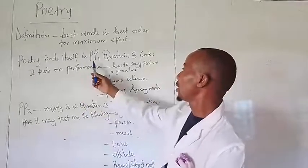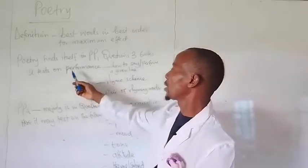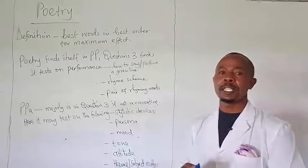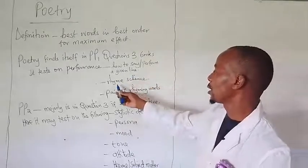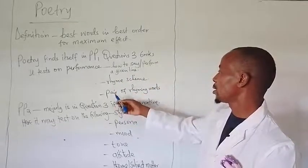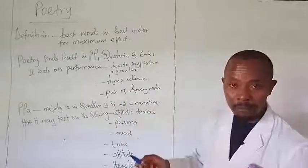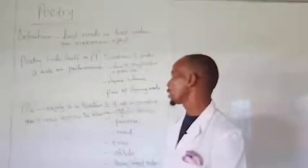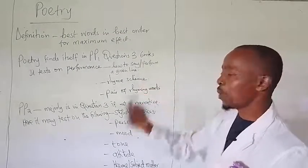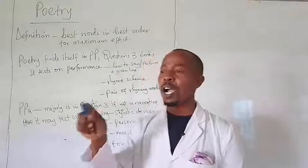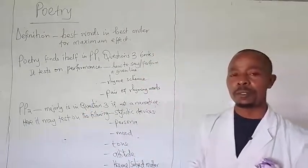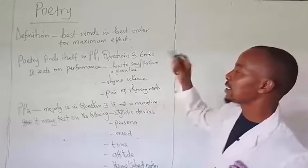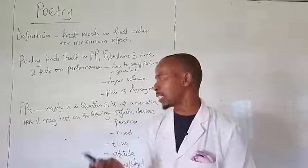To start with Paper 1, you must understand that in Paper 1 it is all about performance. A performance would involve questions like: what is the rhyme scheme, describe the rhyme scheme, identify the pairs of rhyming words, as well as wanting you to perform certain lines. Sometimes they'll ask you how do you perform, for example, line 1 of stanza 3. When such questions are asked, it's important to understand that the response goes to performance and nothing more.